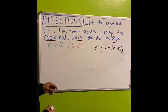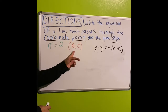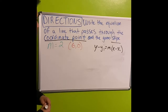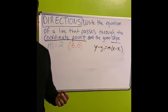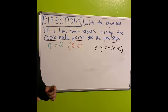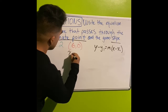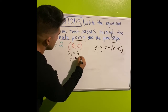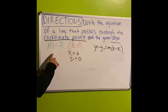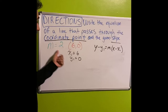The directions say to write the equation of a line that passes through the given coordinate point and the given slope. In this problem, the slope is 2 and the coordinate point is (6, 0). So our slope m is 2, x-sub-1 is 6, and y-sub-1 is 0.